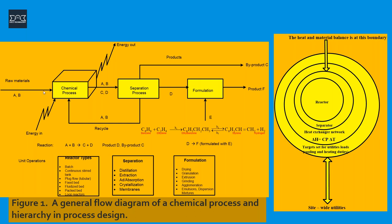In the flow diagram, A and B are the raw materials, while C and D are the products and byproducts. The raw materials go through a separation process and purification, which could involve distillation, extraction, and various types of unit operations. This results in a byproduct C and a main product F. The unreacted raw materials are then fed back to the chemical process.